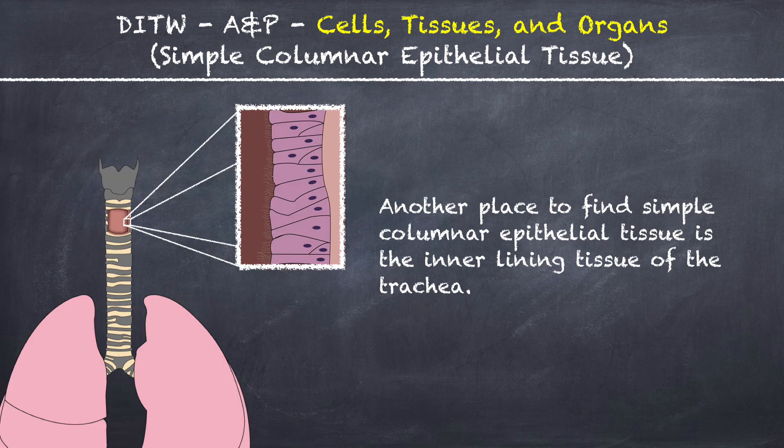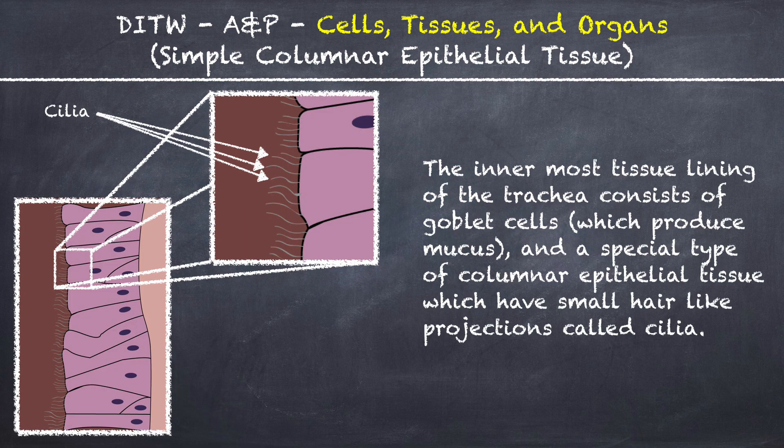Another place to find simple columnar epithelial tissue is the inner lining tissue of the trachea. The innermost tissue lining of the trachea consists of goblet cells, which produce mucus, and a special type of columnar epithelial tissue which have small hair-like projections called cilia.